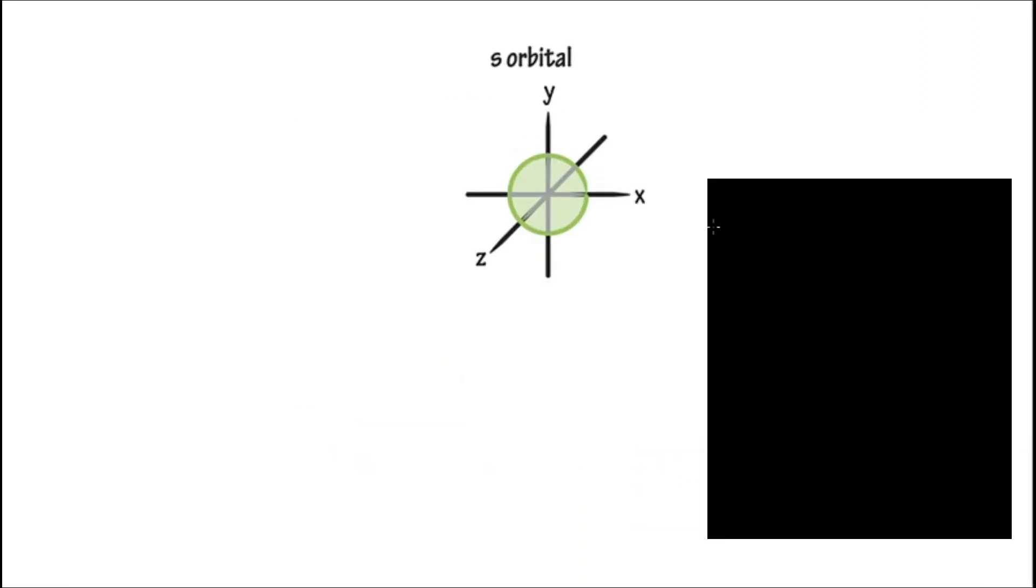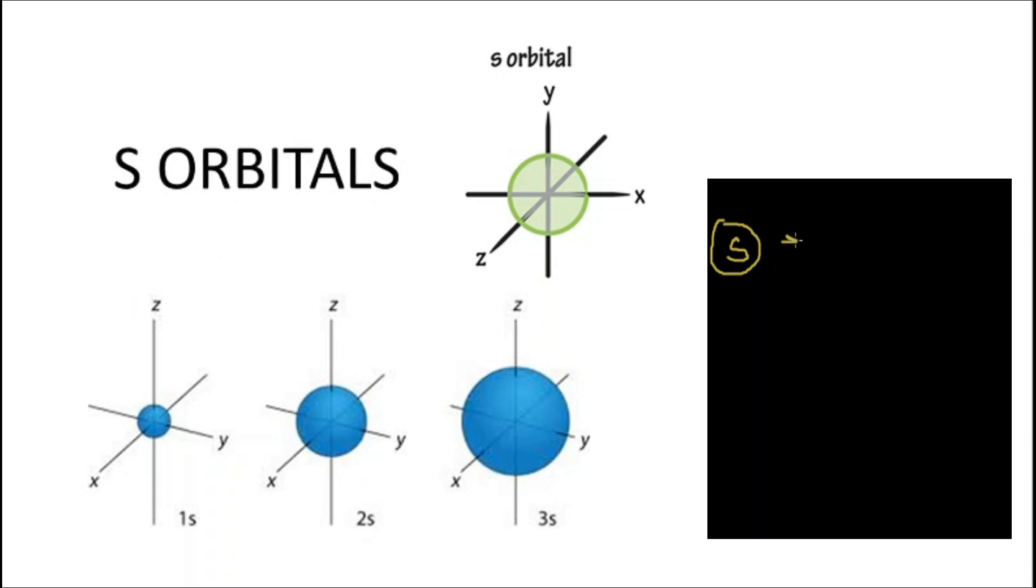Talking about the S orbitals, which are circular in shape and of the lowest energy. As we can see, we have drawn 1s, 2s, and 3s orbitals. As the principal quantum number increases, the size of the orbitals also increases. Let us understand how electrons are filled in these orbitals.